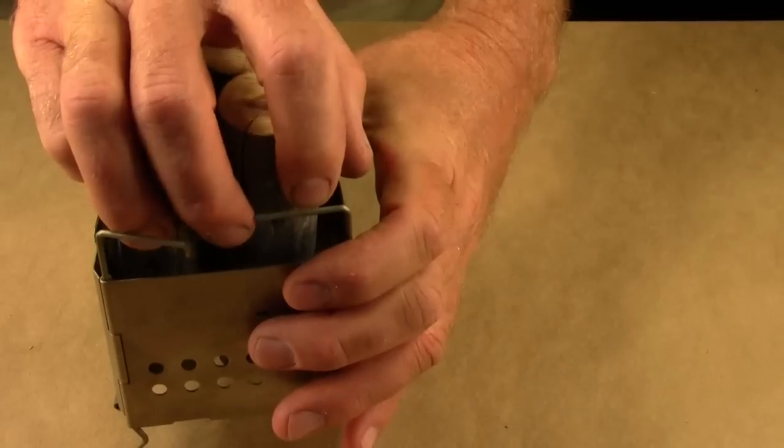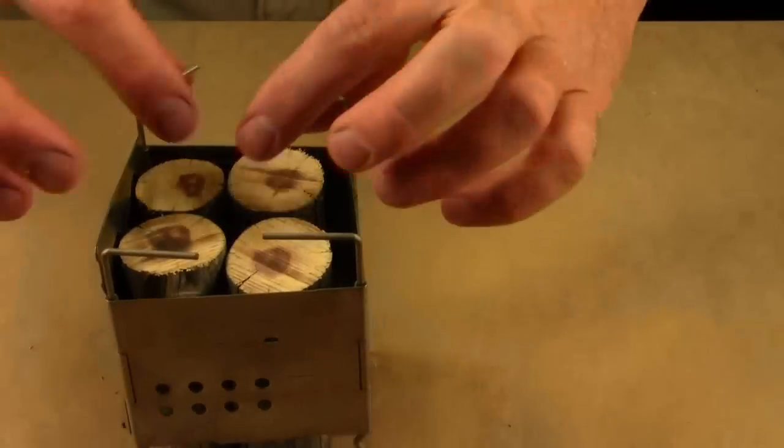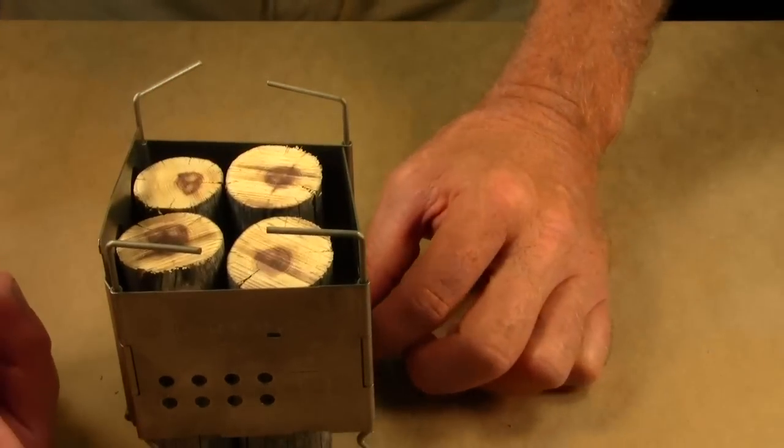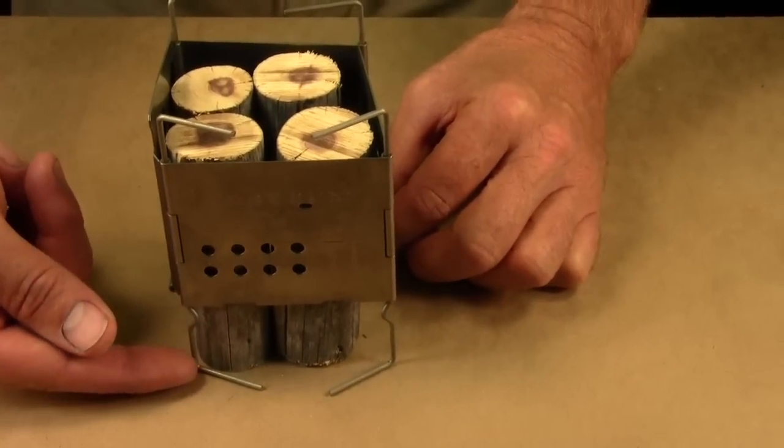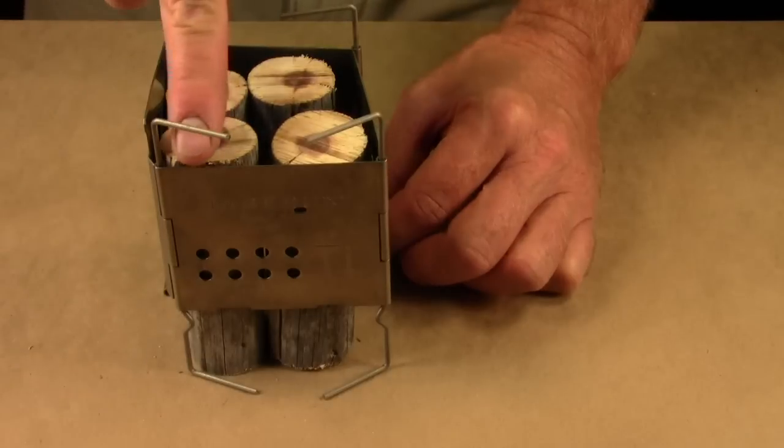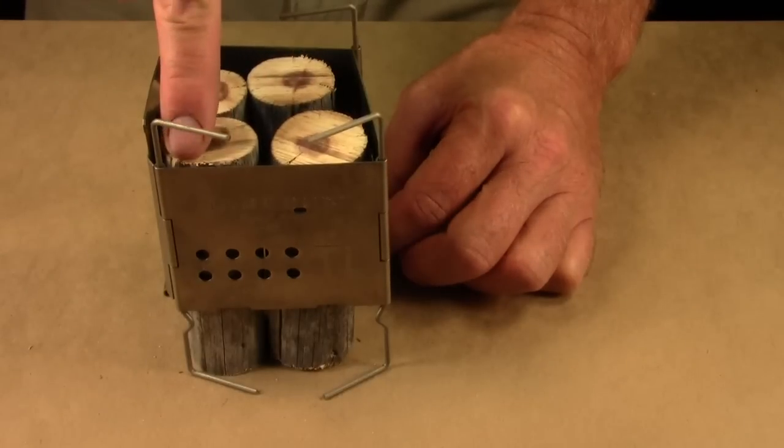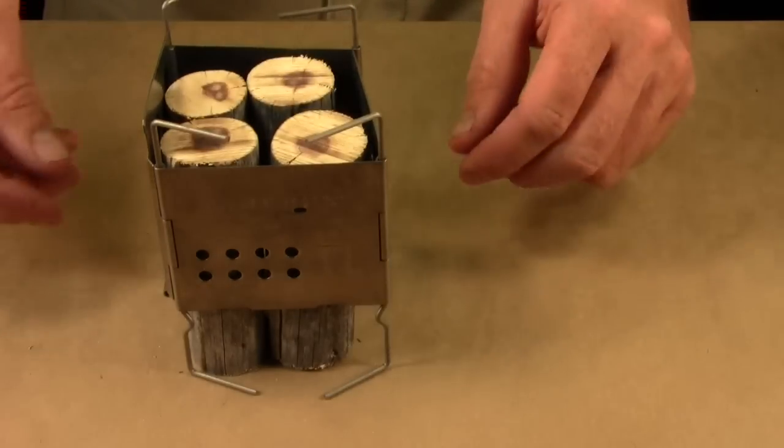And the length that those are cut to is actually from the bottom of the stove, so the bottom of the feet here to the top of the burn chamber. So you want this whole open area from this edge up to be open. It needs that room to exhaust.